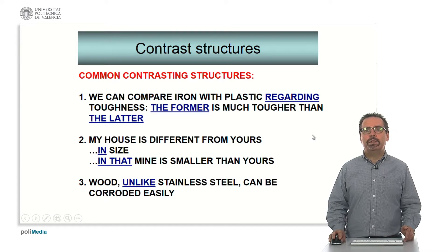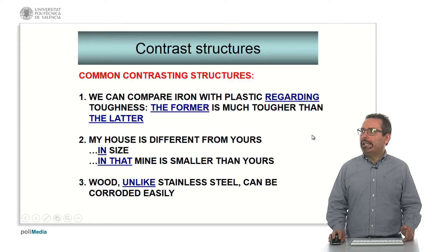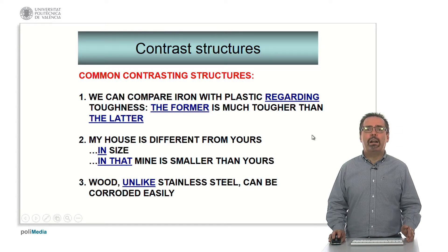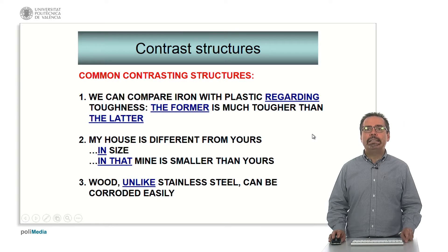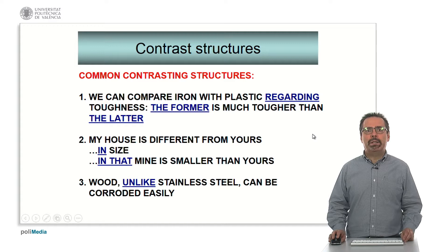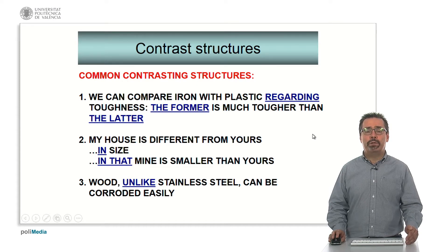Now we're going to move on to some typical contrast structures in English. In example one, we have the comparison between A and B — in this case iron and plastic — and we say the thing we are comparing with 'regarding', 'as regards', etc. We can compare iron and plastic regarding toughness. When we mention two things, we refer to the first one with 'the former' and the second one with 'the latter' — not 'the later', 'the latter'. 'The former is much tougher than the latter.' We can also use expressions with 'in': 'My house is different from yours in size', or 'in that mine is smaller than yours.' Note that 'in' is followed by a noun, and 'in that' is followed by a sentence.